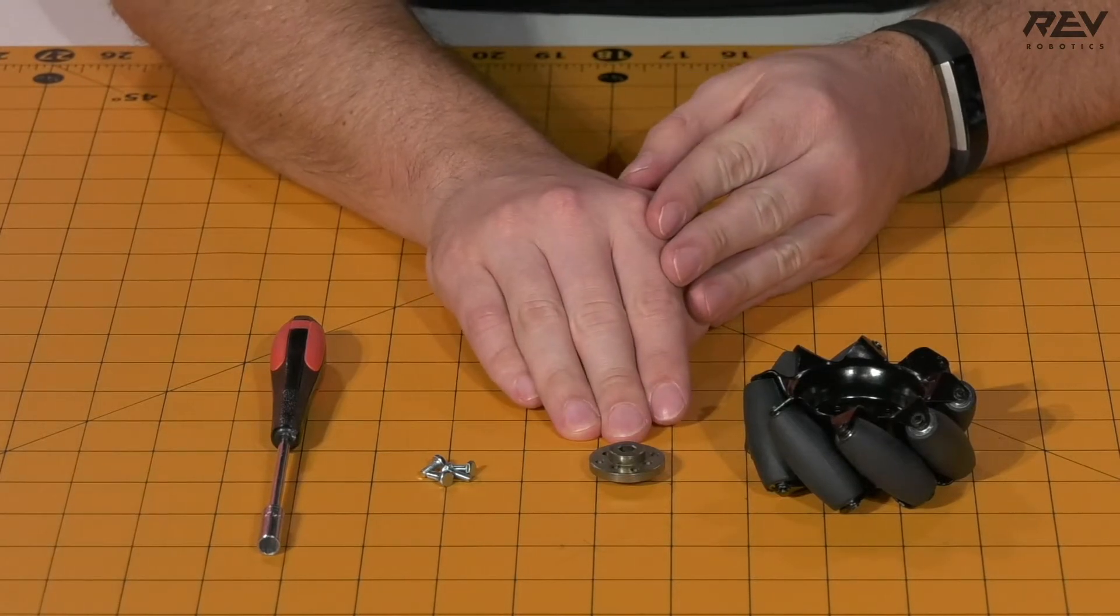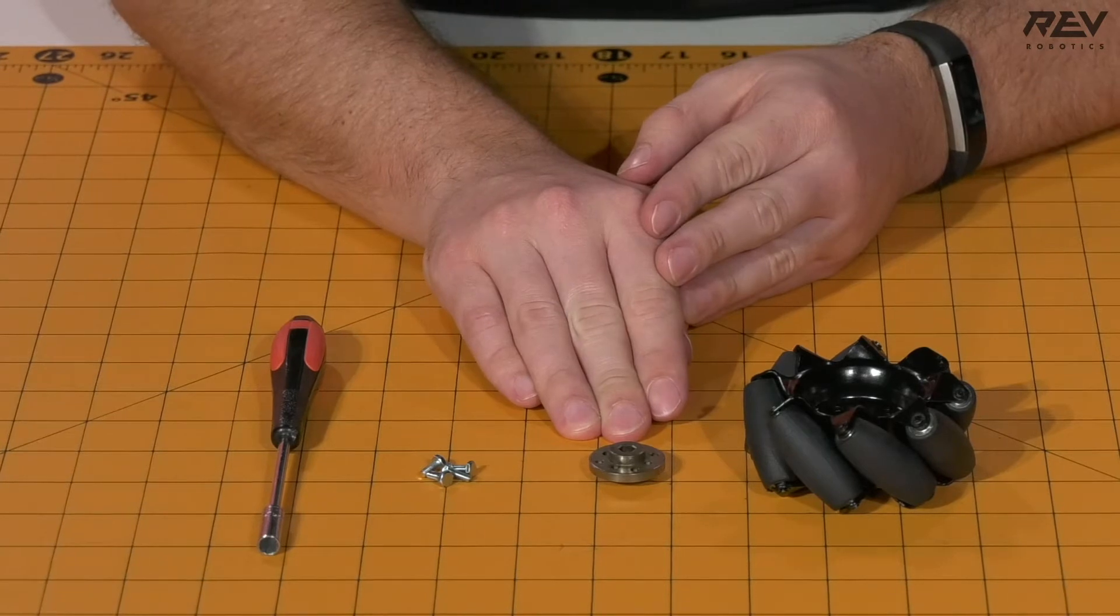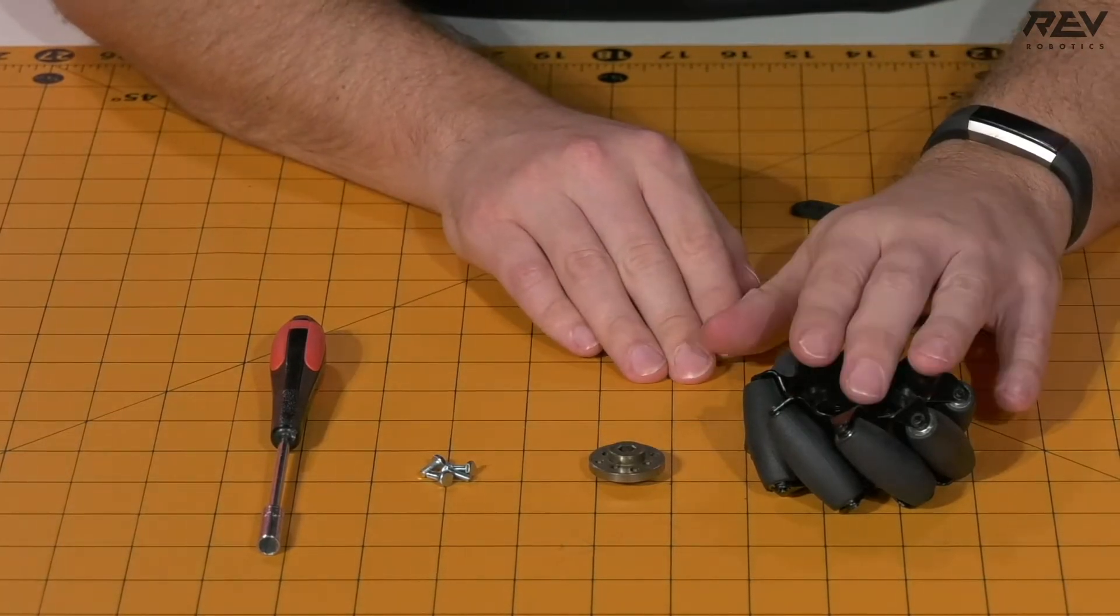a universal hex adapter. Either the V1 or the V2 will work. For this build we're using the V1 and your Mecanum wheel.